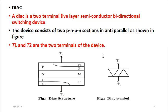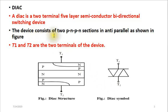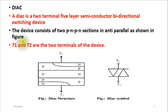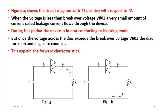The DIAC is a device that has two terminals T1 and T2, and it is a bidirectional semiconductor switching device. This means that it can conduct either from T1 to T2 or in the reverse direction, from T2 to T1. This device consists of two PNPN sections connected in anti-parallel, as shown by these arrows, because the heads are opposite to one another. This anti-parallel connection is the reason why it is bidirectional in nature.